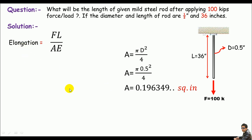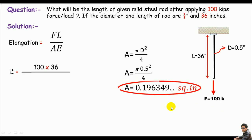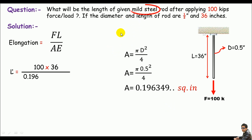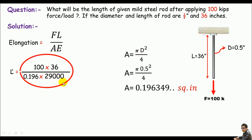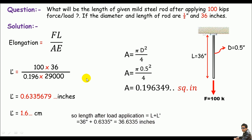Let me call the elongation δ, since the original length is already represented by L. F is 102 kips, L is 36 inches, A is 0.196 in², and the modulus of elasticity of A36 mild steel is 29,000 ksi. Solving gives δ = 0.001633 inches, which is approximately 1.6 mm.